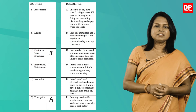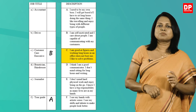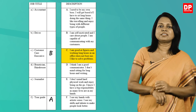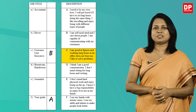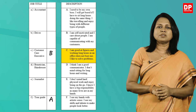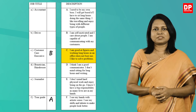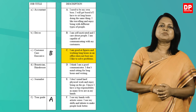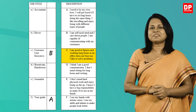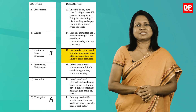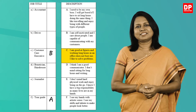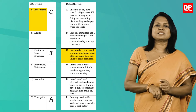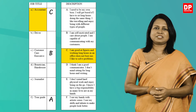Read the third description: I'm good at figures and working long hours in an office does not bore me. I like to solve problems. The sentence 'I'm good at figures' helps you identify very easily who that person is. Yes, it's the accountant. So write C against the job title accountant.